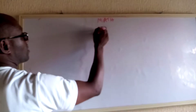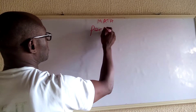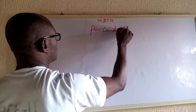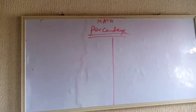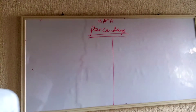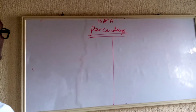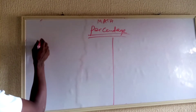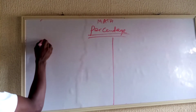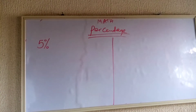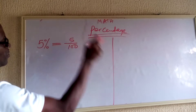Percentage. We are moving to percentage. A number written in percentage has this percentage symbol by its side. If I write 5%, that means 5 over 100.